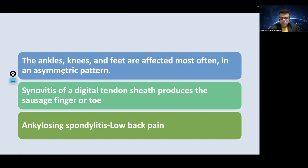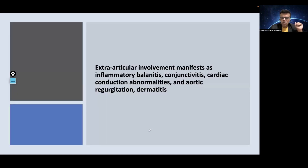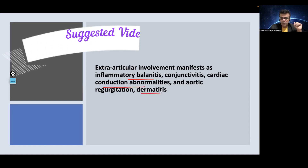Ankles, knees, and feet are most commonly affected, and an asymmetrical pattern of involvement is generally seen. Synovitis of the digital tendon sheath can also be seen. Ankylosing spondylitis can be associated, causing severe low back pain. Extra-articular involvement can present as balanitis, conjunctivitis, cardiac conduction abnormalities, aortic regurgitation, and dermatitis.